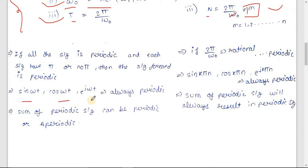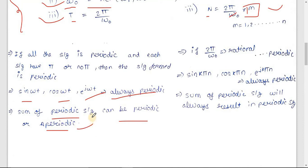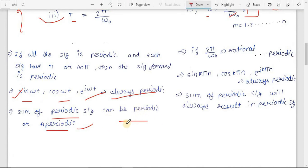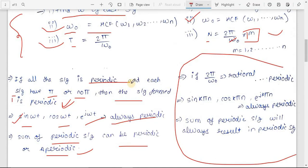Before finding the fundamental time period, you must figure out whether the signal is periodic or not. For continuous time signals, we follow three rules: Rule 1 — sin(ωt), cos(ωt), and e^(jωt) are always periodic. Rule 2 — the sum of periodic signals in continuous time can be periodic or aperiodic. Rule 3 — if all terms are of the same format (all having π or all having no π), then the signal is always periodic.